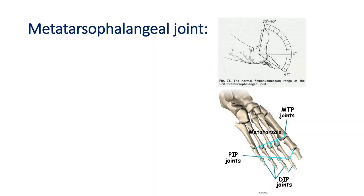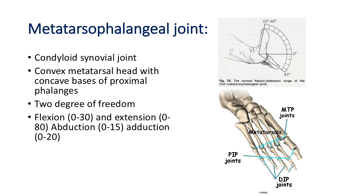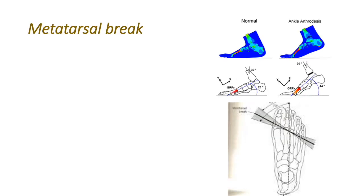Moving on to the metatarsophalangeal joint, which is a condyloid synovial joint. The metatarsal head is convex and the base of the proximal phalanx is concave. It has two degrees of freedom: flexion 0–30 degrees, extension 0–80 degrees, abduction 0–15 degrees, and adduction 0–20 degrees. The important concept here is the metatarsal break — for the heel to be raised, the metatarsophalangeal joint must extend enough to create a break so the heel rises comfortably without the foot slipping.